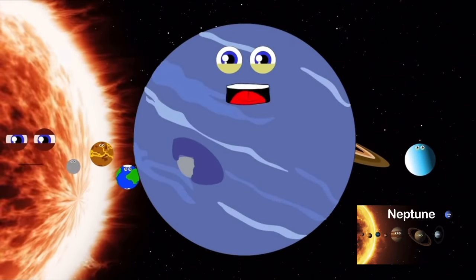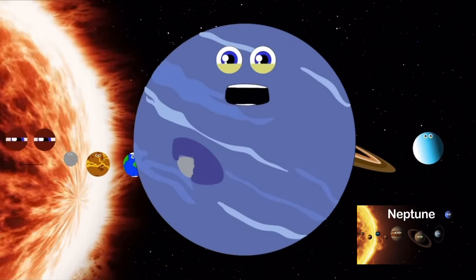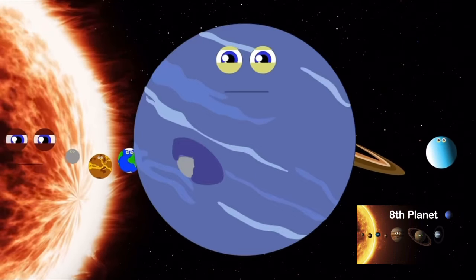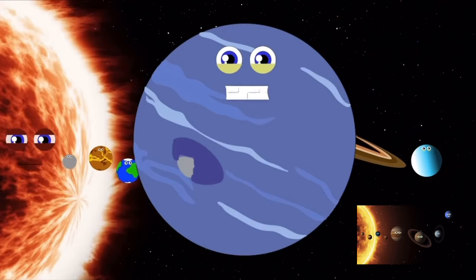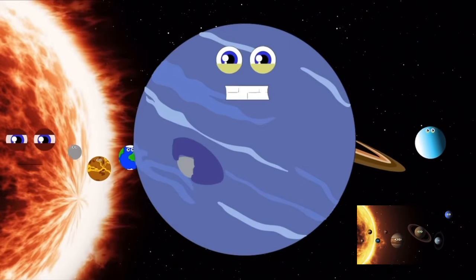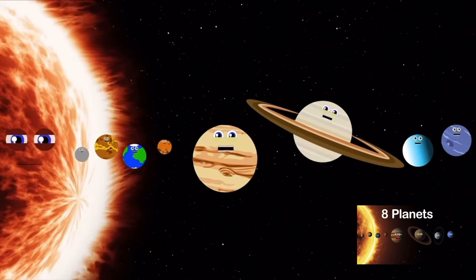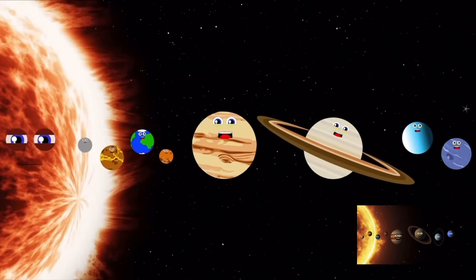My name is Neptune, also blue in color, I'm the eighth planet from the sun. I'm the last gas giant in our solar system, and I'm also the coldest one.